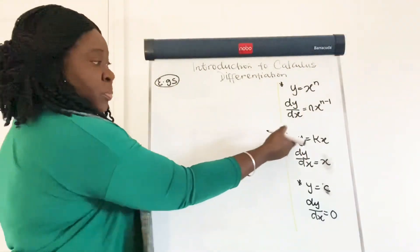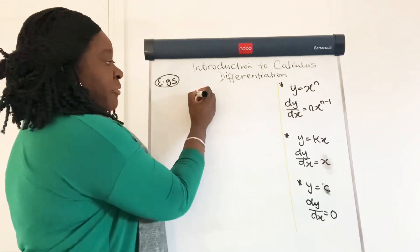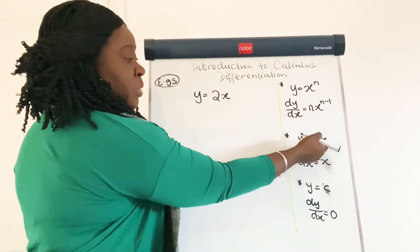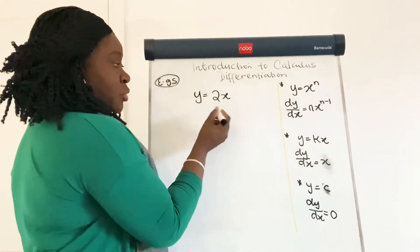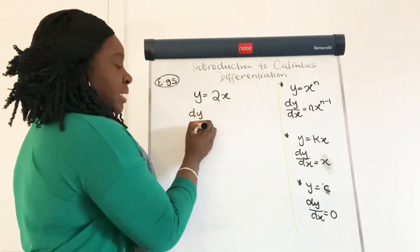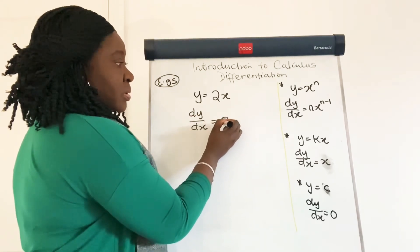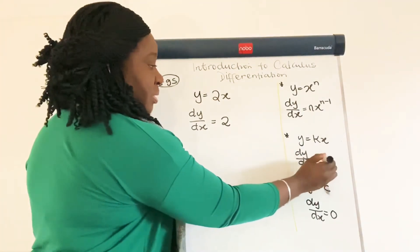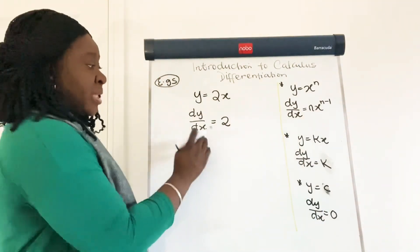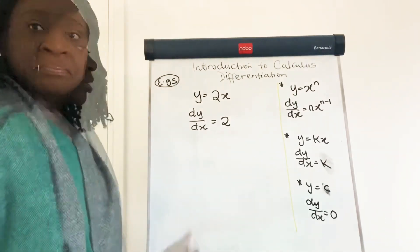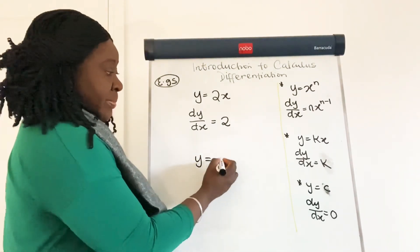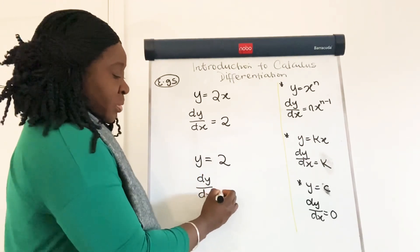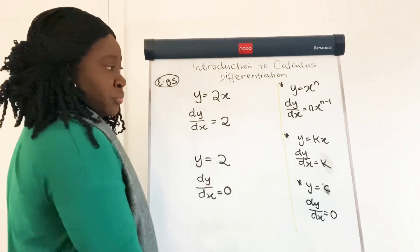Now to show you some examples with the second and third rule: if you have y is equal to 2x, I'm going to be using the second rule and my k becomes 2. Therefore, dy by dx would be equal to 2. And also, if I have y is equal to 2 — just a constant — then dy by dx would be equal to 0, using the third rule.